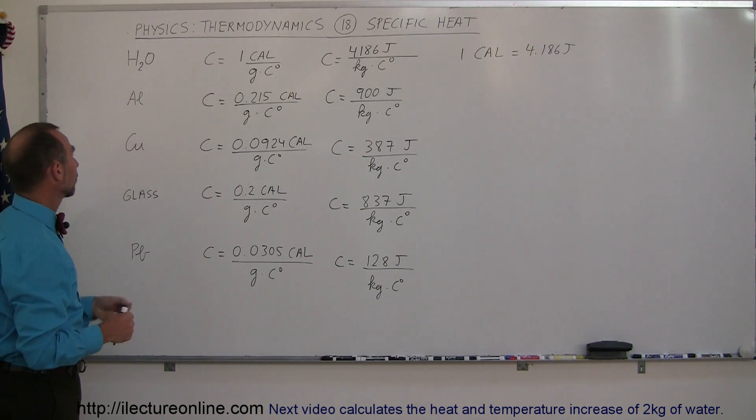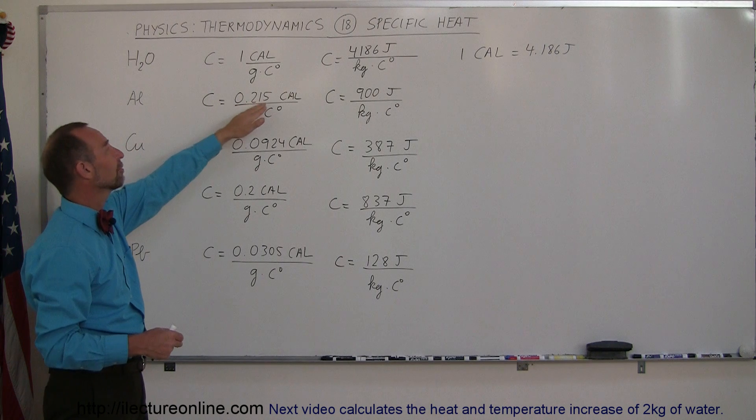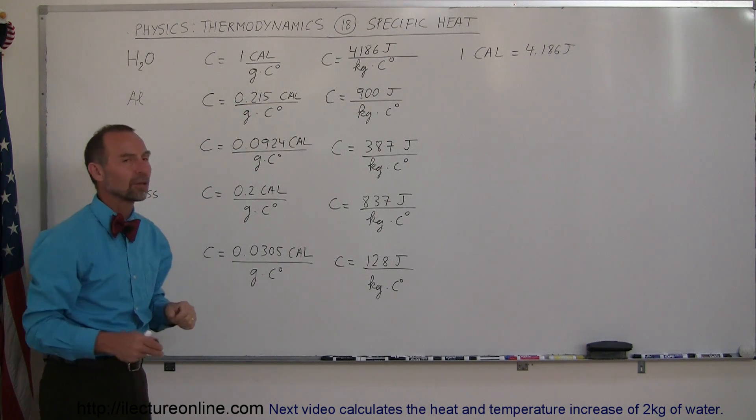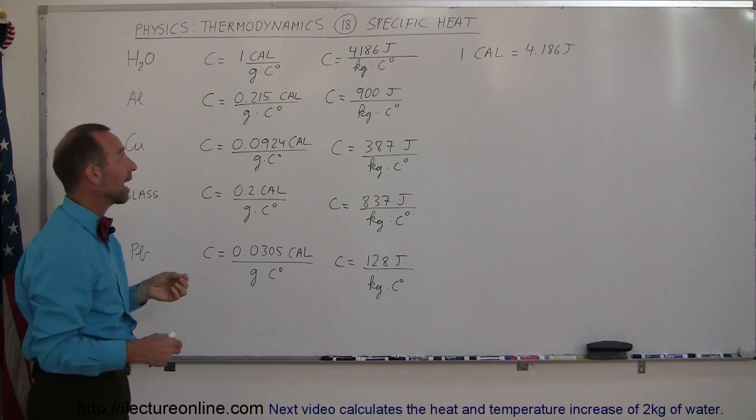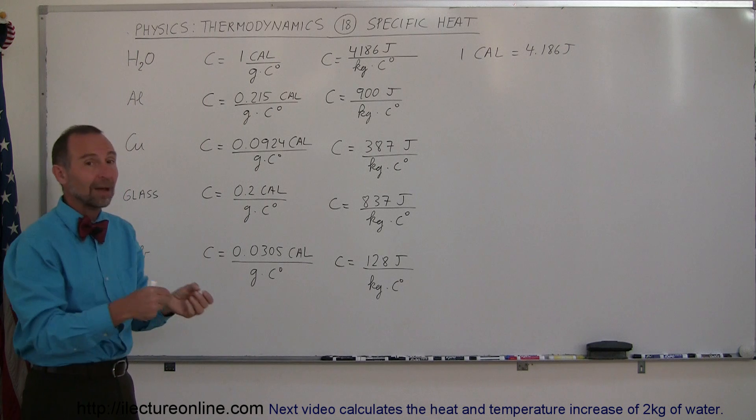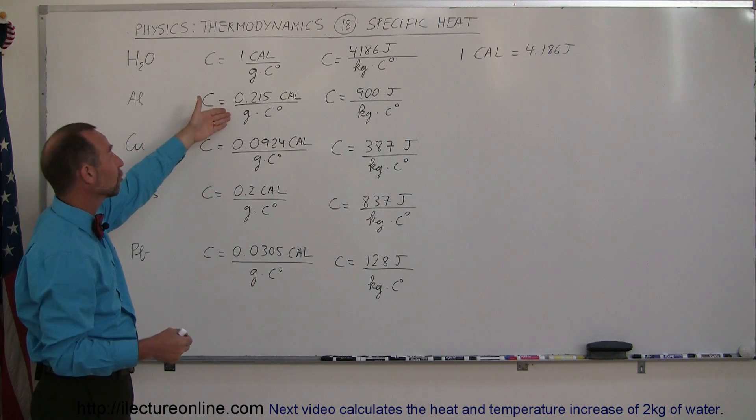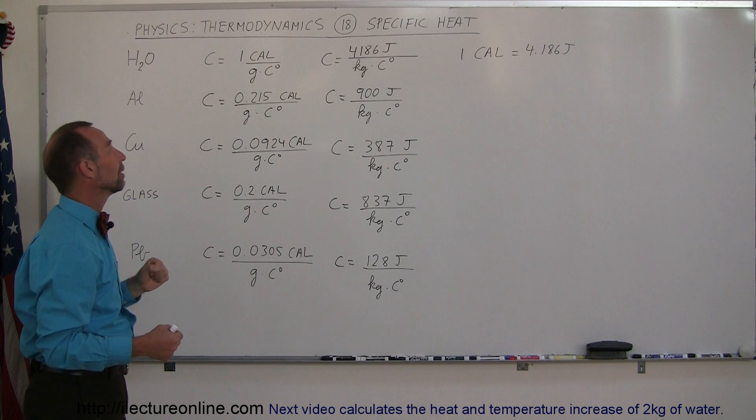Comparing that to other substances like aluminum, the specific heat of aluminum is 0.215 calories per gram per Celsius degree, which is about a fifth of that of water. This means if you add the same amount of heat to one gram of water or aluminum, the aluminum's temperature increase would be almost five times as great.